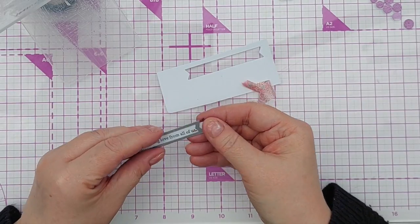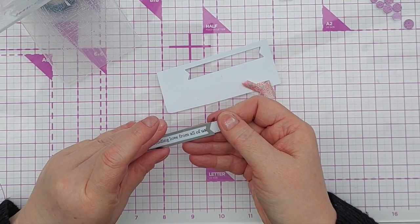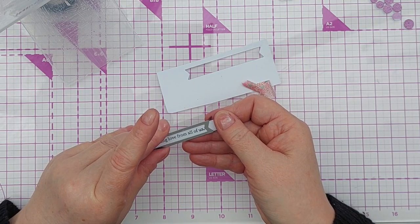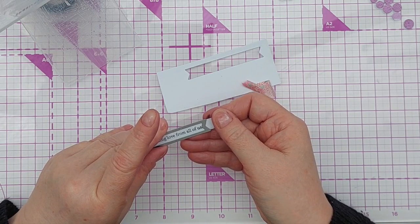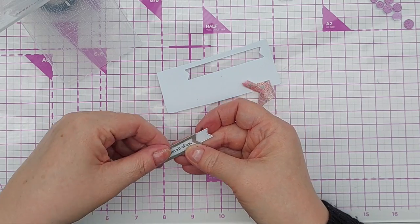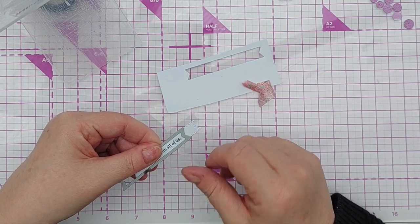To shorten this, all I'm going to do is pop my die cut back in the die and move it along until the teeth of the stitch pattern lock with the pattern on the die cut.